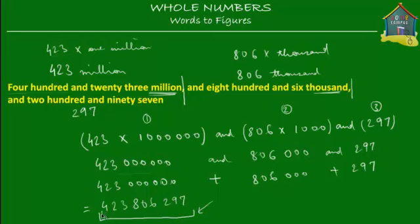So 423,806,297 expressed in figures or numerals — looking at this one more time, the first three bits on the left are the millions (423), the next three bits are the thousands (806), and the last three bits are in the least important place value (297). Starting from right to left: the first three bits are the lowest place value, then the next three are the thousands, and the last three are the millions — the most important place value.